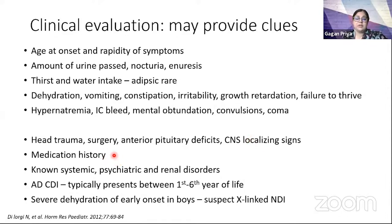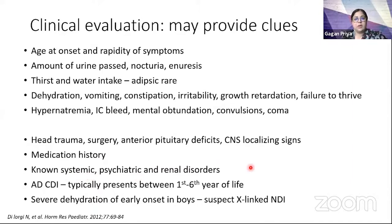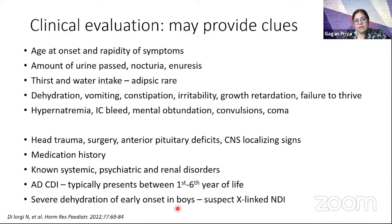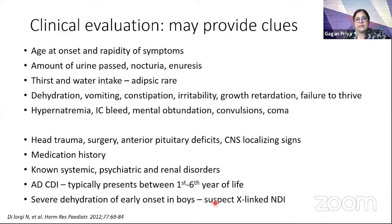A clear medication history including psychiatric medications, lithium, or other drugs that could trigger DI is important. Any known systemic, psychiatric, or renal disease should also be evaluated. Congenital diabetes insipidus usually occurs very early, and if it presents with severe dehydration in young boys, we should suspect X-linked nephrogenic DI.